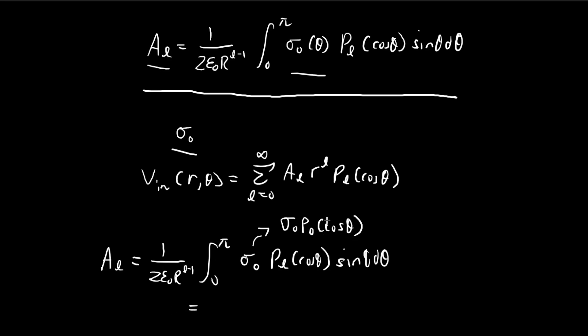And then because the Legendre polynomials are all orthogonal, all the terms from 1 to infinity, they're all going to be equal to 0. So only the a term survives. The only a term that survives is the one where l is equal to 0.